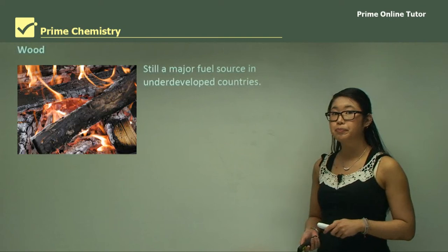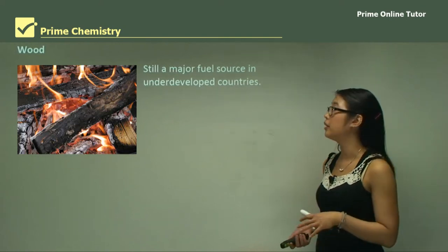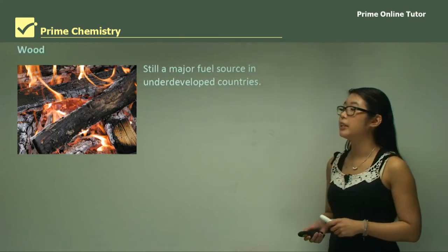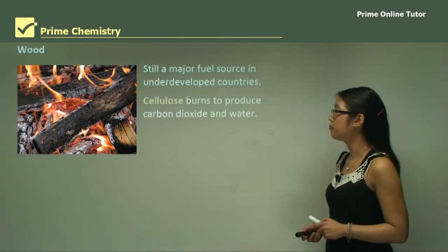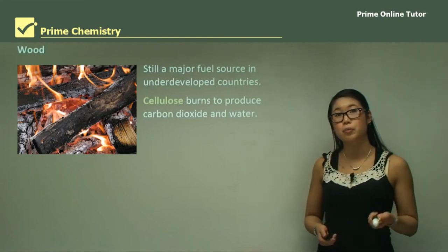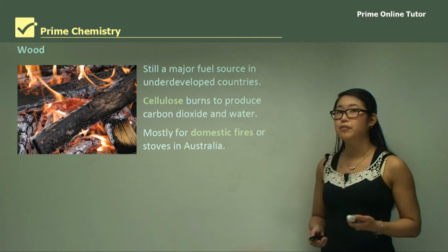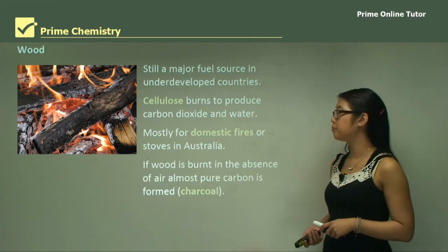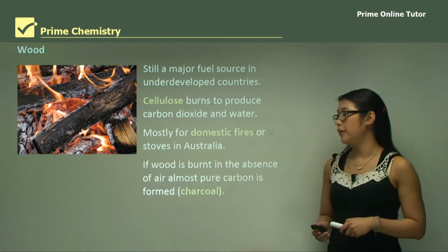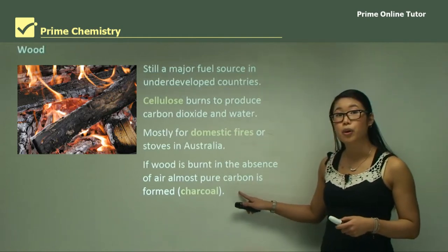Wood is another fuel source. It hasn't been converted into hydrocarbons like fossil fuels have, but it's still a major fuel source in underdeveloped countries. The cellulose burns to produce carbon dioxide and water in a combustion reaction, and it's mostly used for domestic fires or stoves in Australia. If wood is burnt in the absence of air, almost pure charcoal is formed, and pure charcoal is pure carbon.